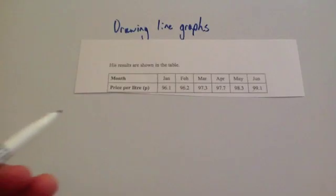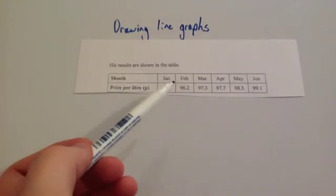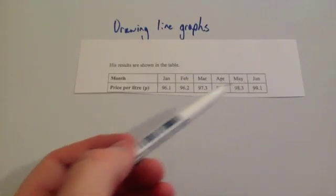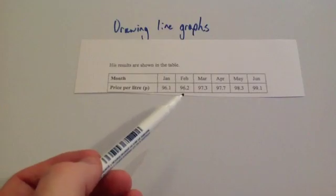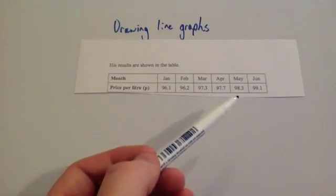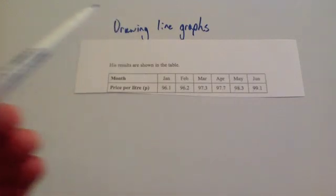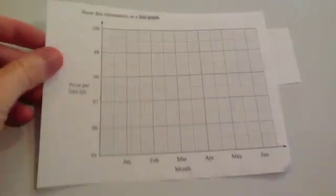Let's have a look at the typical question. We've been given some data with the months January, February, March, April, May and June, and the price per litre: 96.1, 96.2, 97.3, 97.7, 98.3 and 99.1. The question asks to show this information on a line graph. So let's do that.